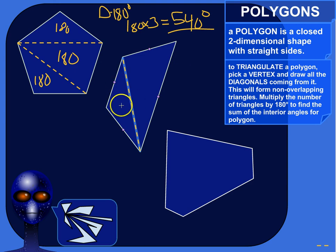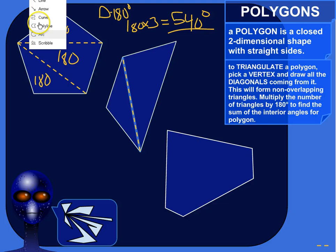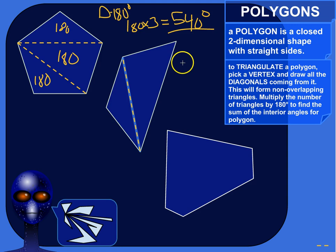So we've cut this polygon into two non-overlapping triangles. A triangle has 180 degrees total for its interior angles. So if I've got two triangles, then I've got 180, oops, 180 times 2. So this polygon will add up to, the interior angles of that polygon will add up to 360 degrees.